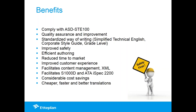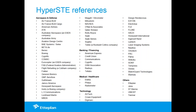The benefits of HyperSTE: you will comply with ASD STE100 if required. It standardizes content — with S1000D you standardize structure, with Simplified English you standardize the content itself. Product safety is a key benefit. It reduces time to market, improves user and customer experience, and ensures you reuse quality content rather than redundant content. Documentation costs go down, and translation requirements become cheaper, faster, and better in quality. References include airlines, aerospace and defense OEMs, banking and finance, medical, healthcare, life sciences, technology companies, forklift trucks, garden equipment, consumer electronics, and even UNICEF.